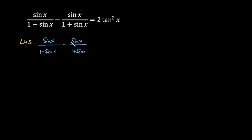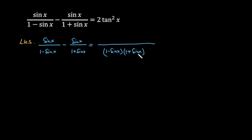So let us solve this expression. First of all I will take the LCM: 1 minus sin x, and 1 plus sin x. So multiply 1 plus sin x with sin x — this gives sin x times (1 plus sin x) — minus sin x multiplied by 1 minus sin x.